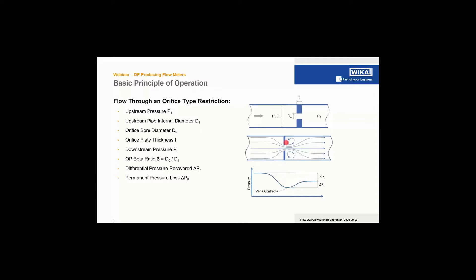The lowest pressure is not encountered at the edge of the primary element — it's somewhat downstream. The vena contracta has a smaller diameter right downstream of the flow restriction. The beta ratio of an orifice plate is expressed as the diameter of the orifice divided by the ID of the pipe. After the primary element, there's some pressure recovery, but not back to the same pressure as before — you have turbulences and losses, causing a permanent pressure loss. The amount of permanent pressure loss depends on the shape of the primary element and how well it matches the vena contracta.